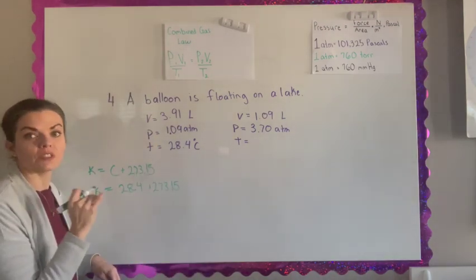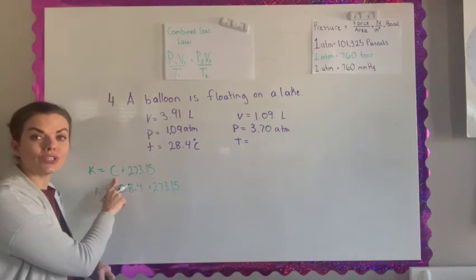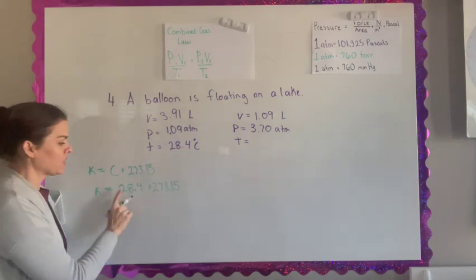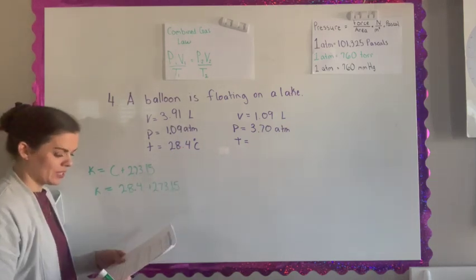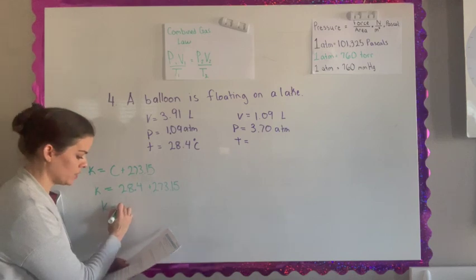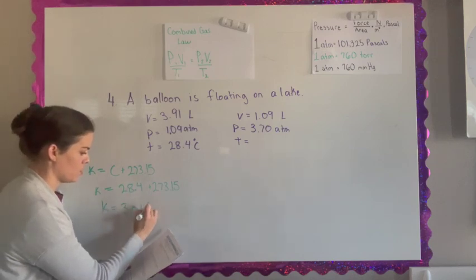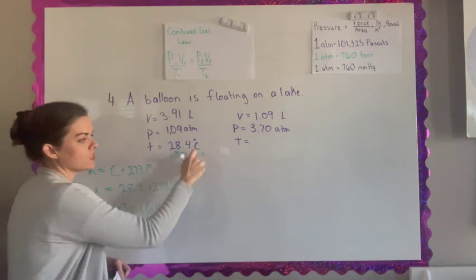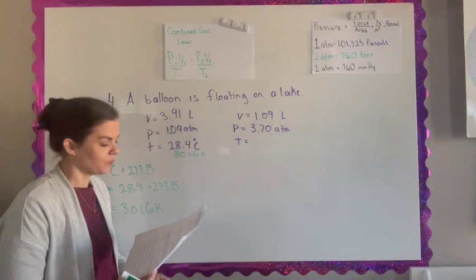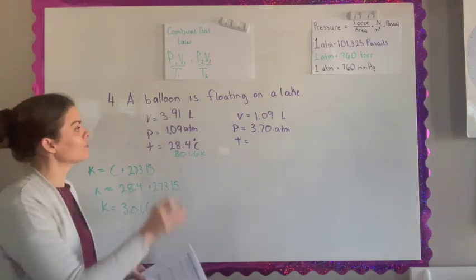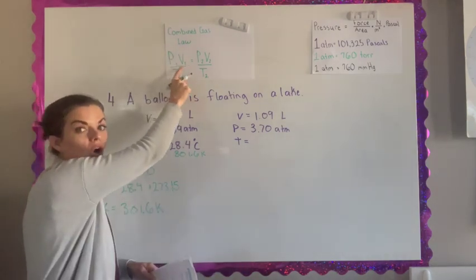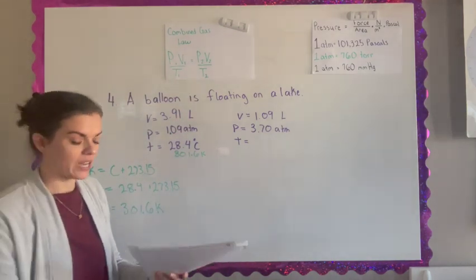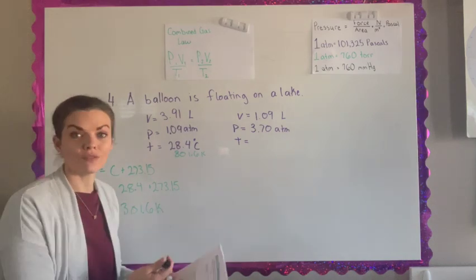Immediately I know I'm working with gas laws. And so when I'm working with gas laws, temperature has to be measured in Kelvin. So the first thing you're going to do is you're going to want to convert this Celsius to Kelvin. So the formula for going from Celsius to Kelvin is you take your Celsius and you add 273.15. So I'm going to take my 28.4 and I'm going to add it to 273.15 and you'll get a Kelvin temperature of 301.6. So this is going to be the temperature that you use in your gas laws.